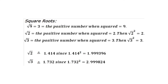Before continuing with the quadratic formula, we need a better understanding of square roots. The square root of 9 is the positive number that when squared gives 9, which is 3 — we can't use −3 because it's negative. The square root of 2 is the positive number that when squared gives 2. Similarly, √3 squared is 3, √5 squared is 5, and so on.